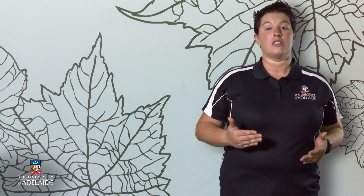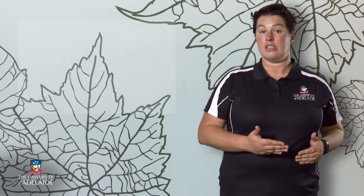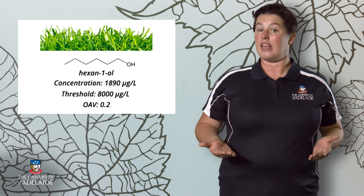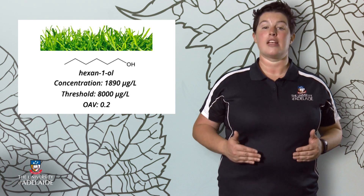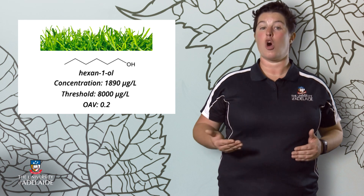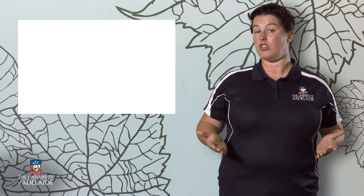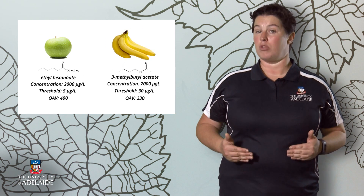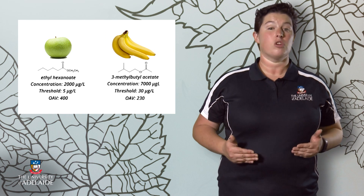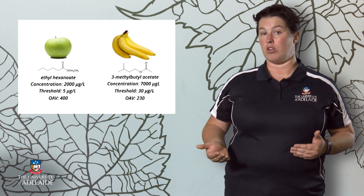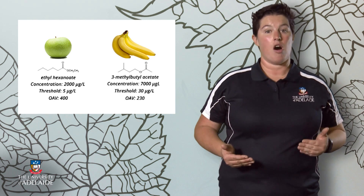Despite being the most abundant of the volatile compounds listed, hexanol is unlikely to contribute any notable cut grass aroma since it has a high detection threshold and an OAV of less than 1. In contrast, ethylhexanoate and 3-methylbutylacetate, which are also present in high concentrations, have low thresholds resulting in very high OAVs, so these compounds would be expected to contribute apparent green apple and banana attributes respectively. You might encounter these esters in fruit-driven wine styles such as Riesling or Sauvignon Blanc.